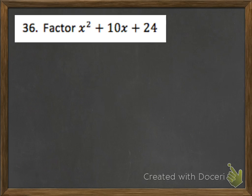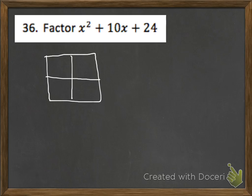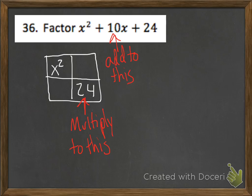Problem 36 wants me to factor x squared plus 10x plus 24. We're going to use the box method. So x squared goes in the top left, and our last term, 24, goes in the bottom right. These other two boxes will be filled with two terms that multiply to 24 and add to 10. The factors of 24 are 1 and 24, 2 and 12, 3 and 8, and 4 and 6.